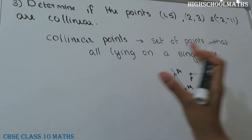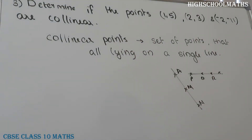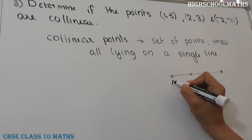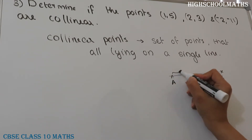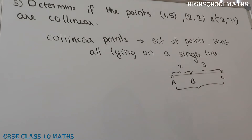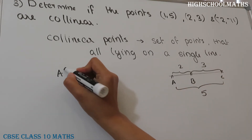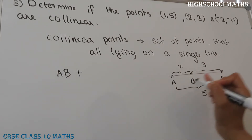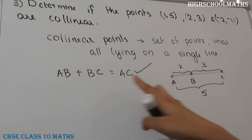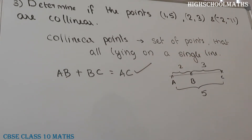This exercise is related to the distance formula. We have to answer: what is the distance formula? The condition for collinear points — if we have 3 points A, B, C on a straight line, and the distance AB plus BC equals AC, then A, B, C are collinear points.